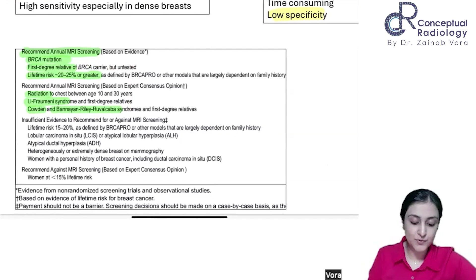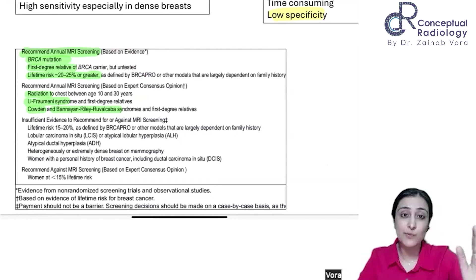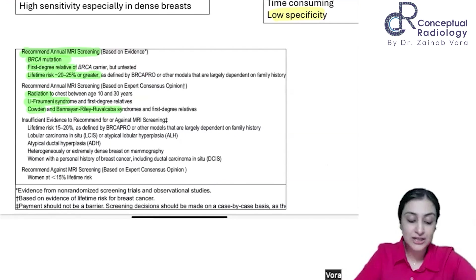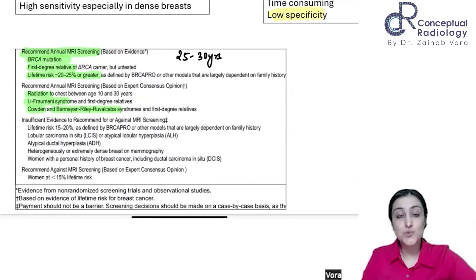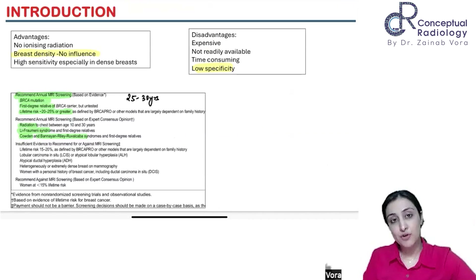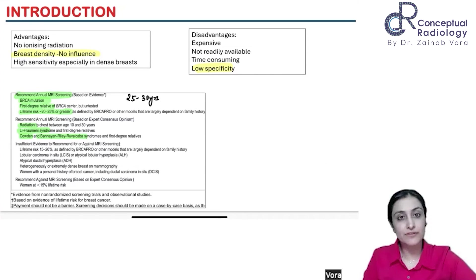These are the syndromes where MRI screening is advised. The usual age to start is somewhere between 25 to 30; some guidelines say 25, some say 30. This is for screening. For diagnostic purposes, it's a clinical decision — there are no strict guidelines. It's used as a problem-solving tool whenever needed.